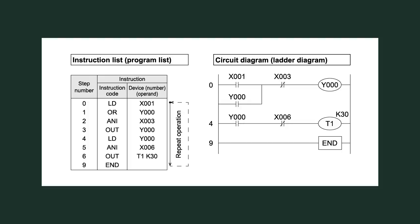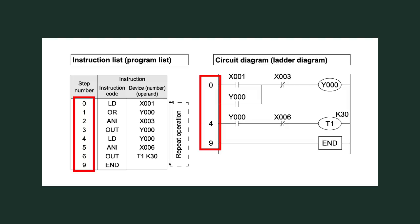A PLC program is a series of instructions, and the operation unit of an instruction is called a step. Each instruction in the program has a step number, which tells us its position in the program.